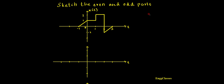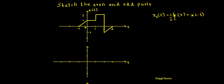The very first thing is we will look for how to sketch the even part. For that we have the formula xe(t) which is equal to x(t) plus x(-t), the whole thing divided by 2. This is the formula to find the even part, and similarly we have another formula to find the odd part that we will see later.